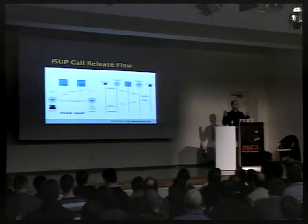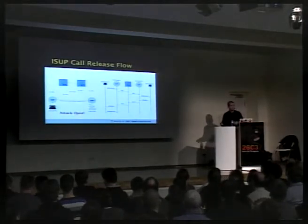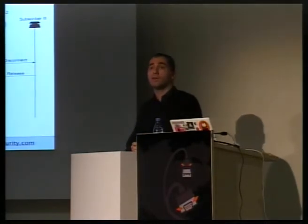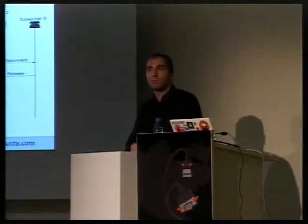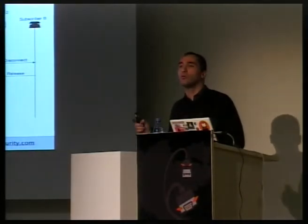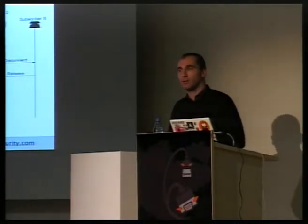With other protocols like INAP — Intelligent Networking Application Part — you can redirect all calls going to one number to another number. For example, redirecting an emergency service number to a porn line. The phone network won't know about it. Though for emergency services this might not work on 112 or 911, because they use special circuits and software.